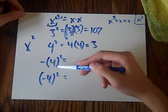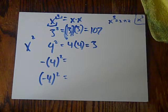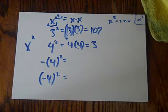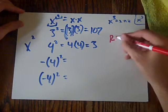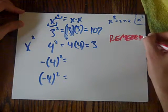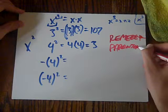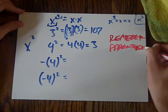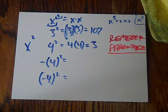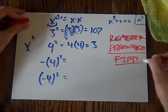So negative 4 squared. Okay, so we have to remember this one rule, is that parentheses come before anything else. You must always remember the parentheses. So remember... I think I spelled that right. Parentheses. Okay. So remember parentheses. So I always do them first. First.